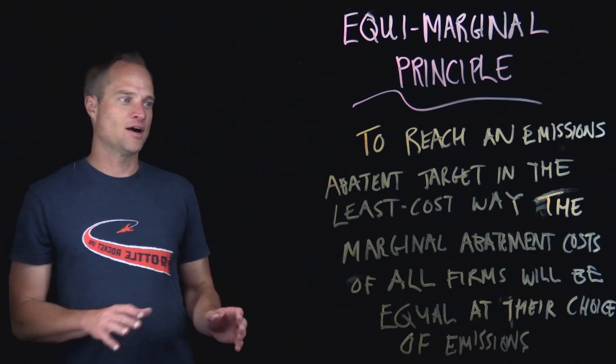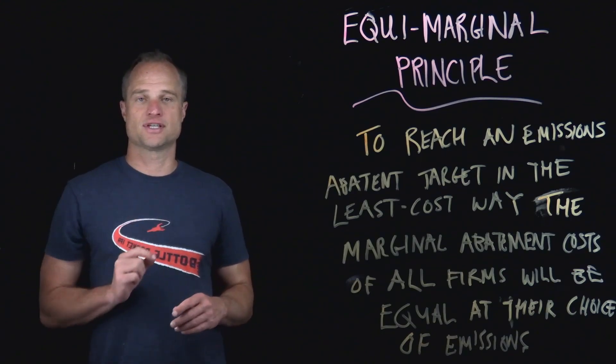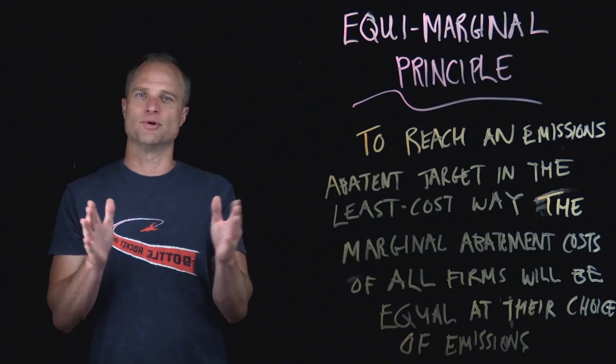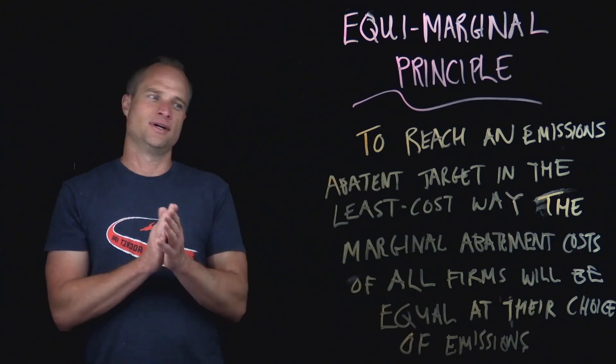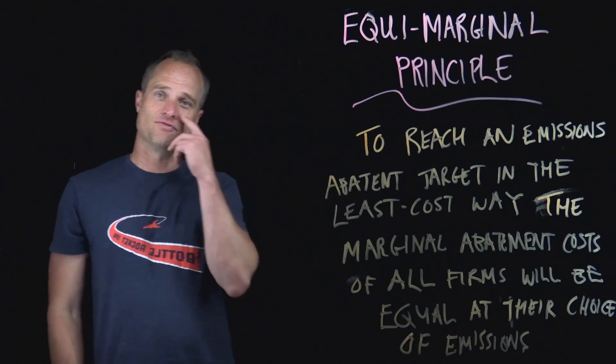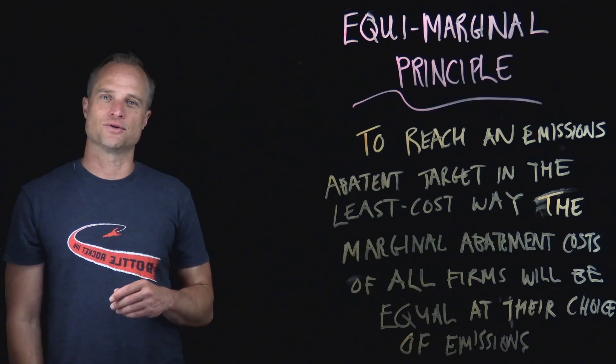So what I want to do to help solidify understanding of this concept is do a number of examples. The first example I'm going to use is in tabular form, and we can walk through how meeting an emissions target in the cheapest way requires that the firms, and it'll be two firms in this case, have equal marginal abatement cost at their choice of emissions.